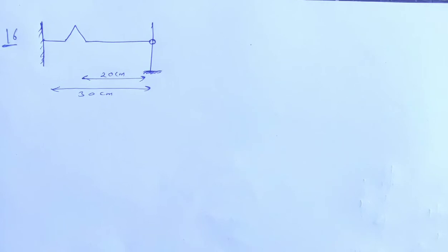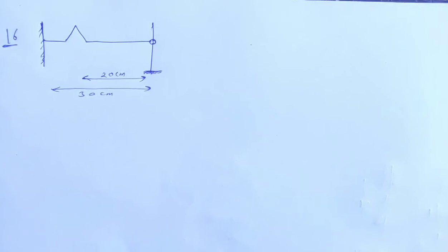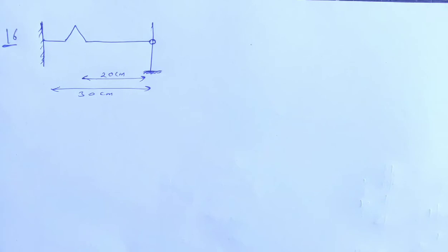A string of linear mass density and total length 30 cm is tied to a fixed wall at one end and to a frictionless ring at another end. The ring can move on a vertical rod. A wave pulse is produced on the string which moves toward the ring at a speed of 20 cm per second. The pulse is symmetric about its maximum, which is located at a distance of 20 cm from the end joining the ring. Assume that the wave is reflected from the end without loss of energy. Find the time taken by the string to regain its shape.